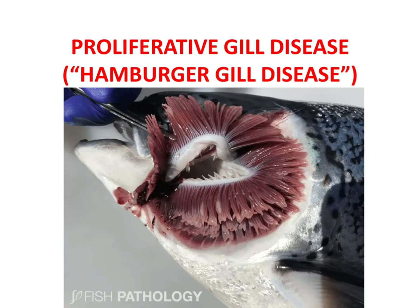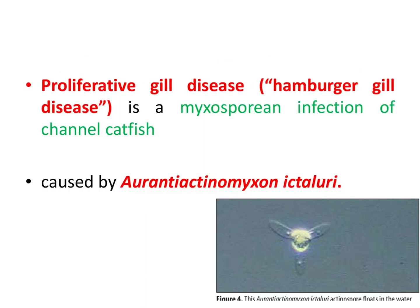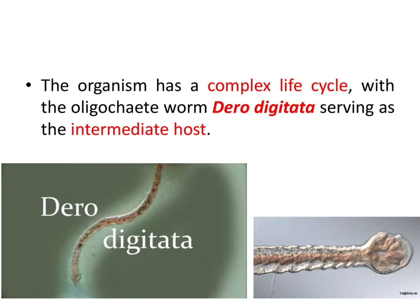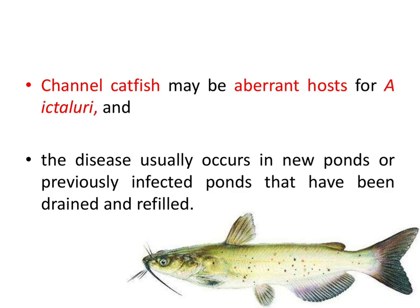The third disease is proliferative gill disease, or hamburger gill disease — a myxosporine infection of channel catfish. This disease is caused by Aurantiactinomyxon ictaluri. This picture shows the spore of this organism, which floats in water. The organism has a complex life cycle with the oligochaete worm Dero digitata serving as the intermediate host. Channel catfish may be apparent hosts for egg delivery, and the disease usually occurs in new ponds or previously infected ponds that have been drained and refilled.